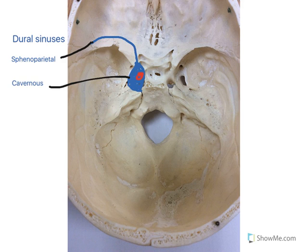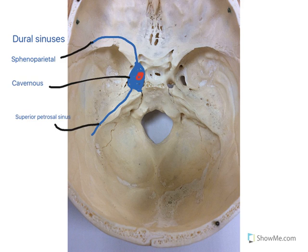Venous blood from the cavernous sinus can take two routes. It can continue laterally along this ridge — this is the superior petrosal sinus. Or blood can pass down through the inferior petrosal sinus.